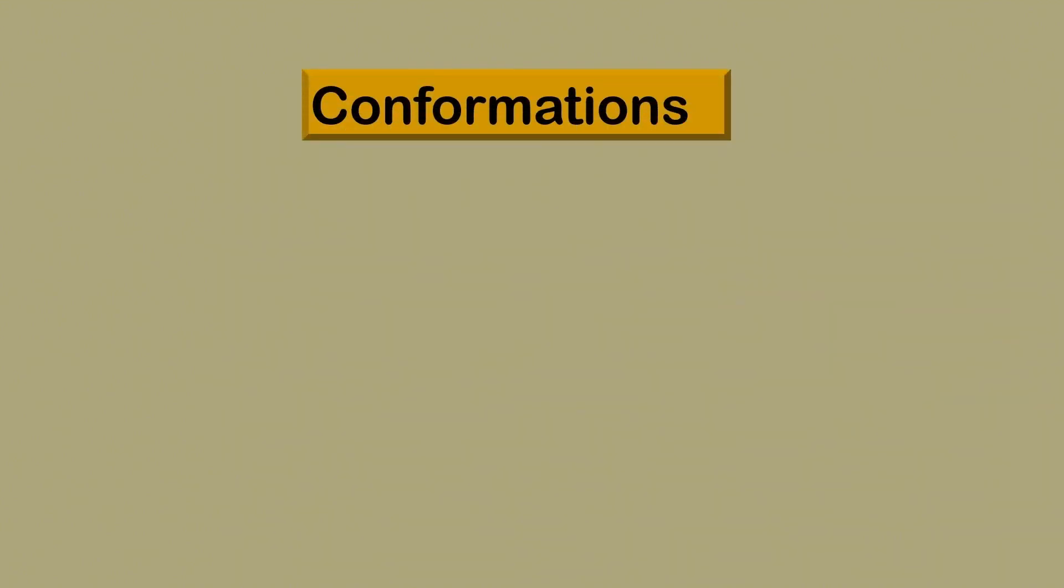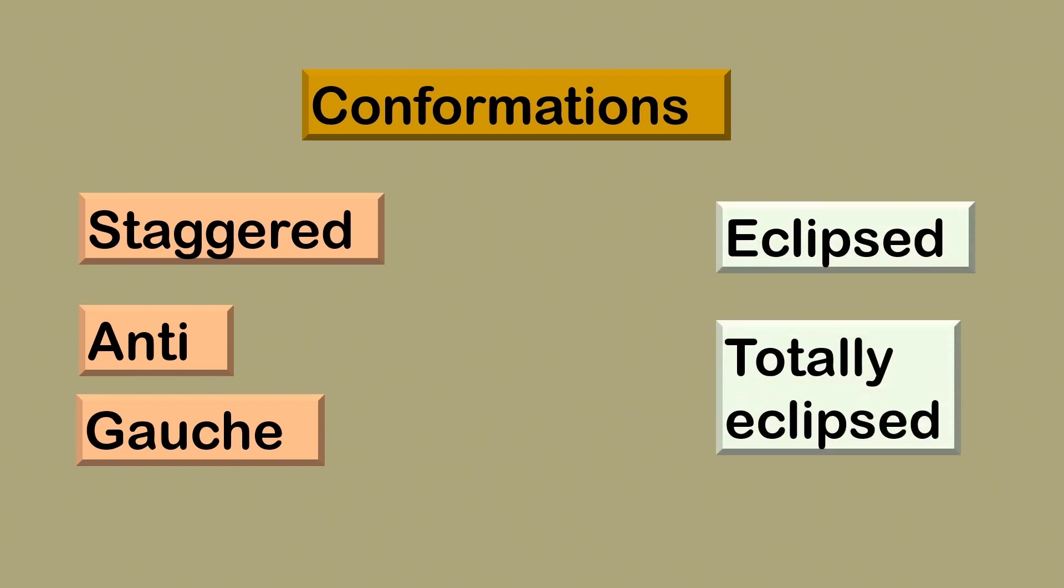The conformations can either be staggered or eclipsed. Staggered conformations are further subdivided into anti and gauche, while eclipsed conformations can also be totally eclipsed.